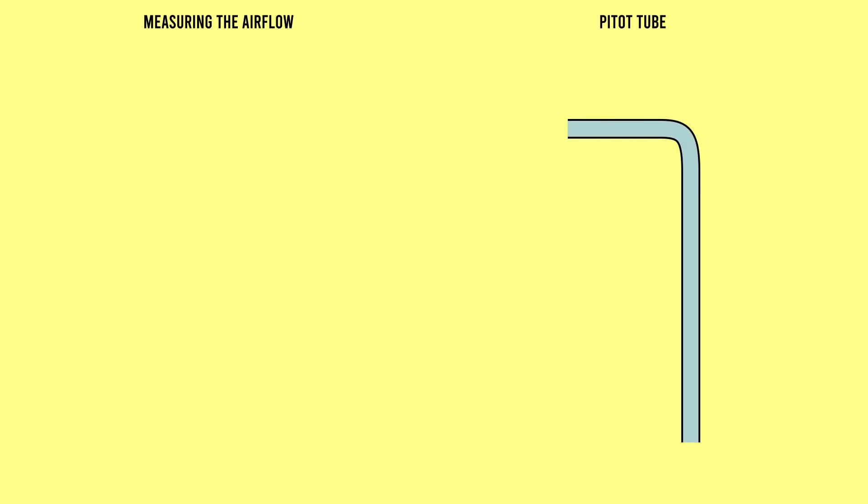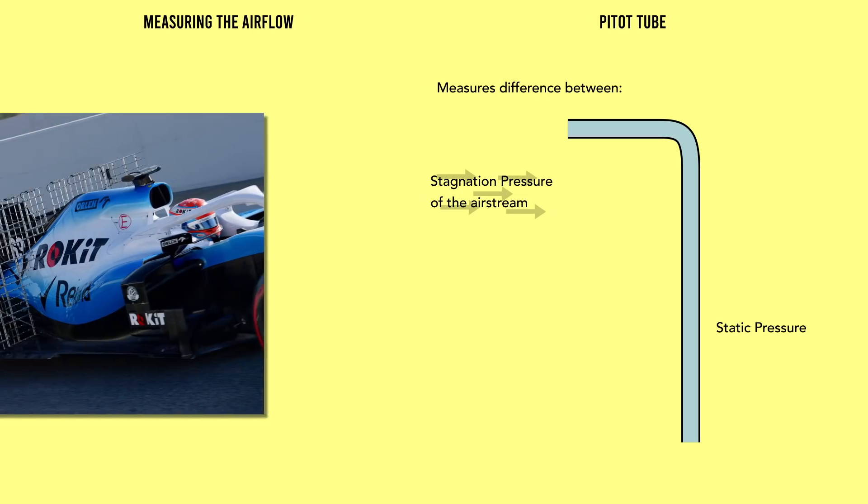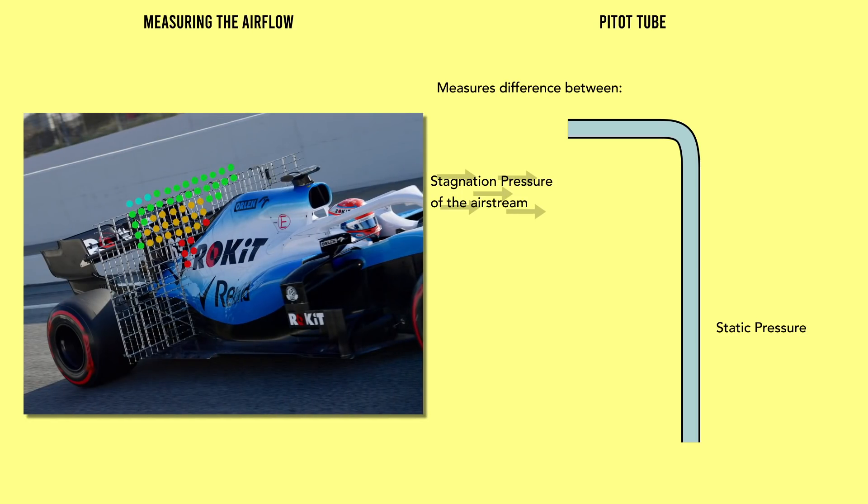Pitot tubes measure the velocity of the air flowing past them by comparing the stagnation pressure, the pressure from the force of the flowing air, against the static pressure, just the normal standing air pressure. And if you do this multiple times over a large area, as these large structures do, you can build up a picture of the shape and speed of the air over your car.